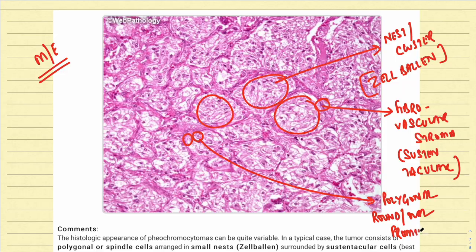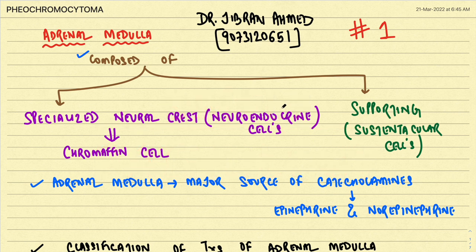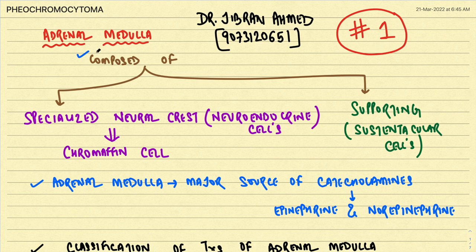Hello students and welcome back to Simply Pathology. Today we are going to start a series of lectures on high-yield topics. This is lecture number one, and today's topic of discussion is a very high-yield exam topic: pheochromocytoma. Before we delve into pheochromocytoma, we have to understand the basics. Pheochromocytoma is the most common tumor arising from the adrenal medulla.